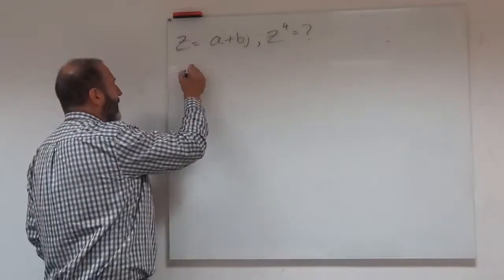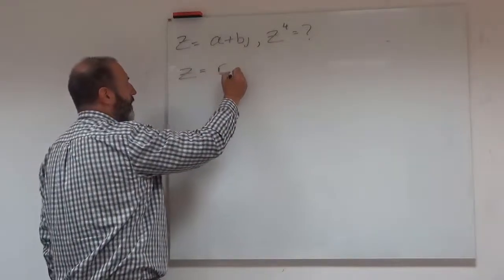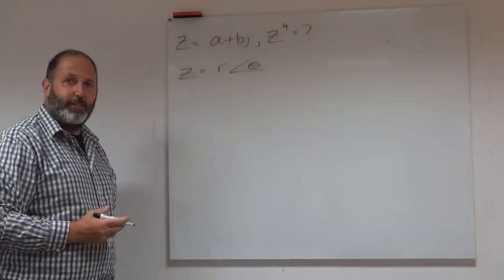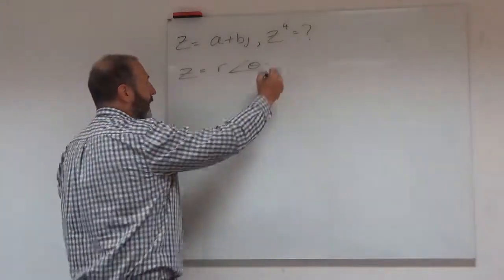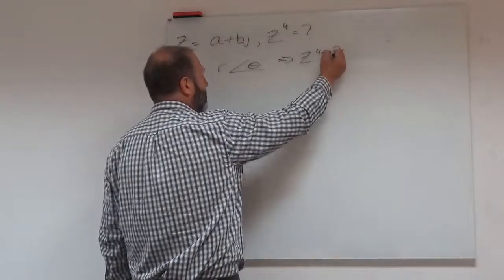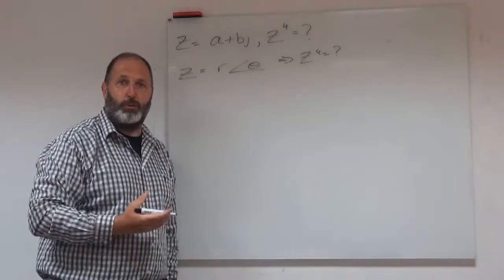So if I now have some other value, let's call this z, r and then theta. So it's now in polar form and I want to find z to the 4. Well I'm much happier with that because I have a nice rule that will talk me through it.